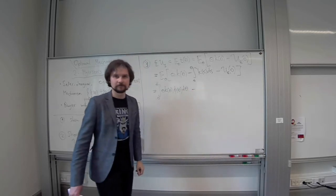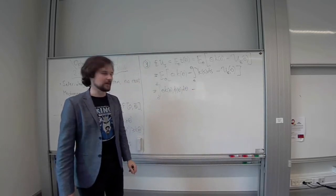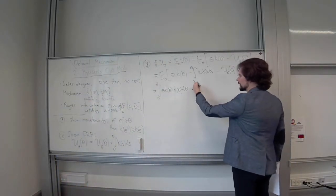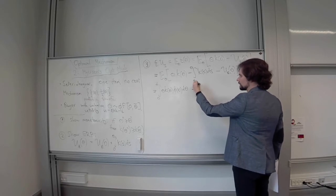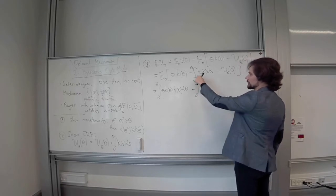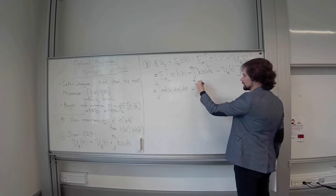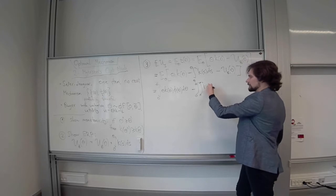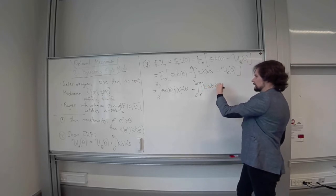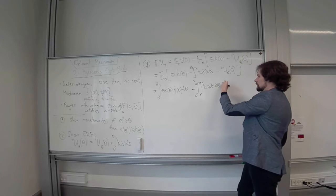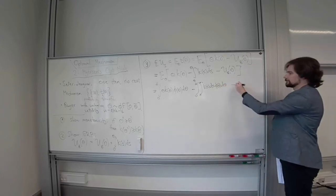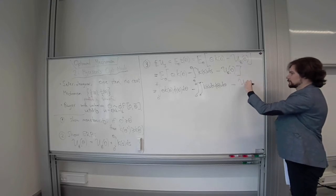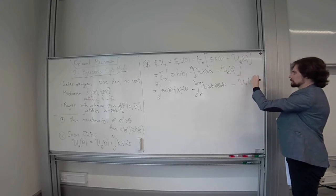We now have an expression with many integrals, and we want to simplify — particularly the double-integral term, which involves two nested integrals over θ. We need to use a different integration variable since θ is already used. We want to simplify that term.